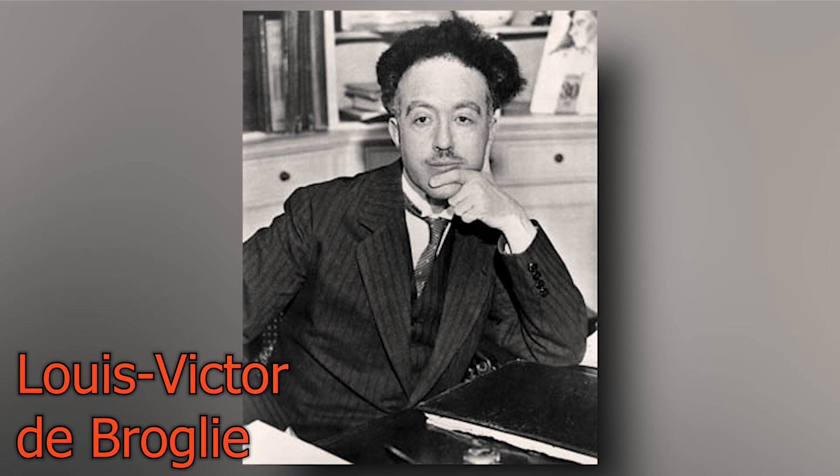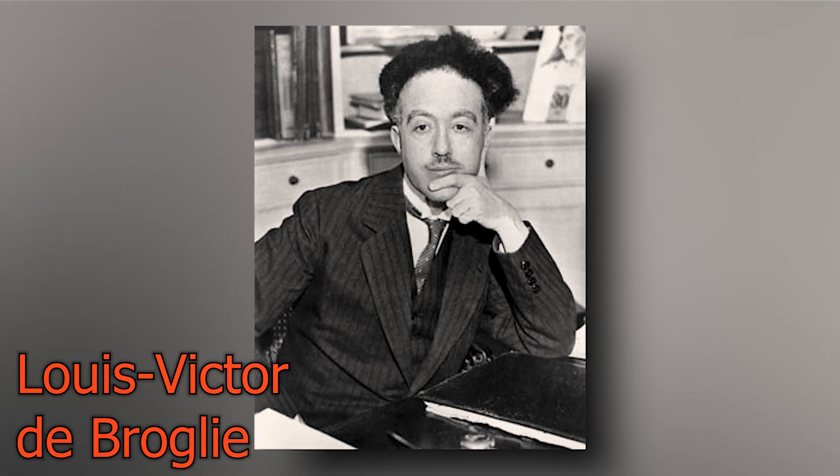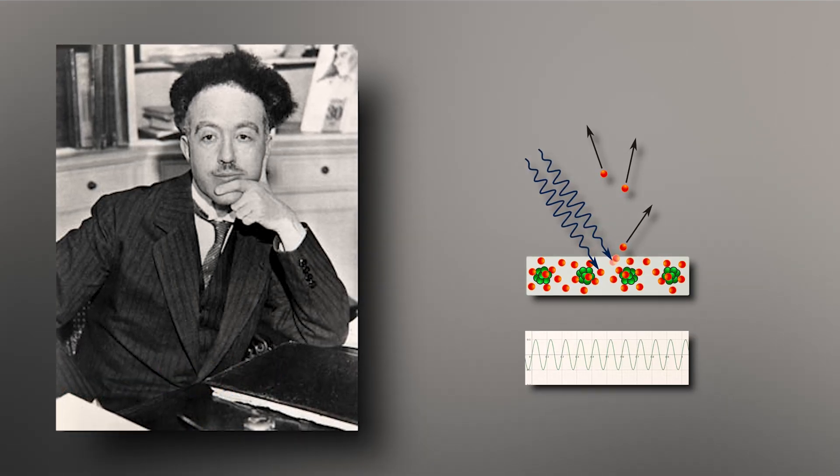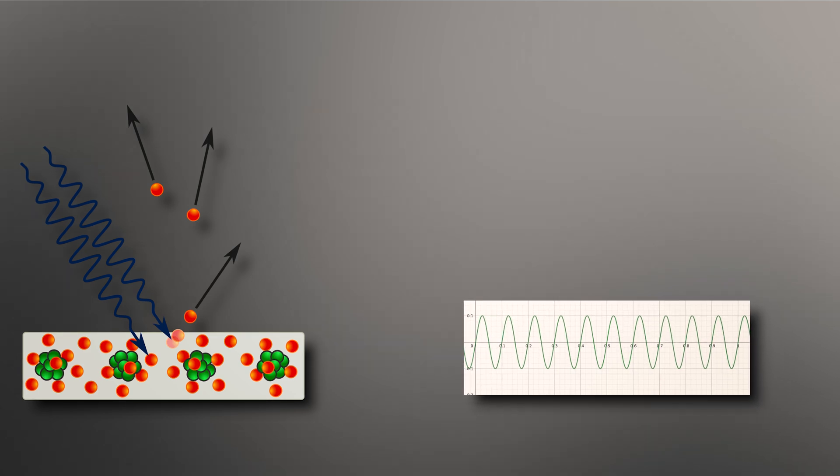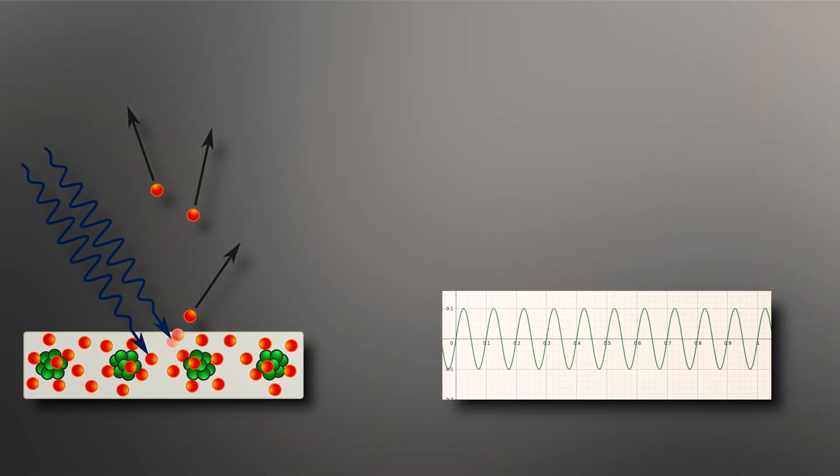In 1923, French physicist Louis-Victor de Broglie proposed that all forms of matter and radiation exhibit both particle- and wave-like attributes. This wave-particle duality introduced a new layer of complexity to our understanding of the sub-atomic world.